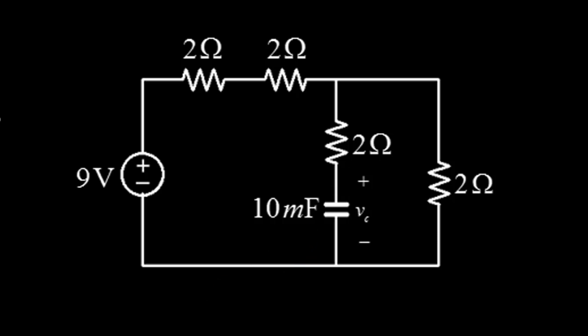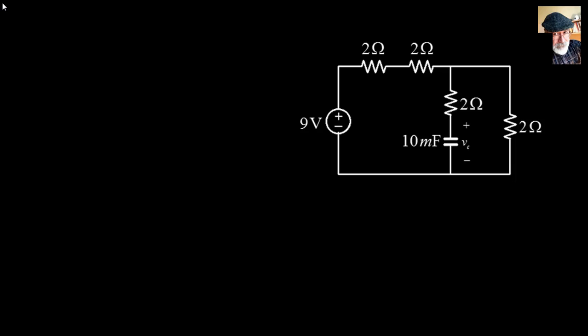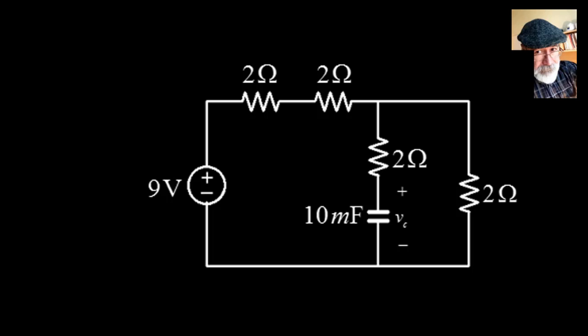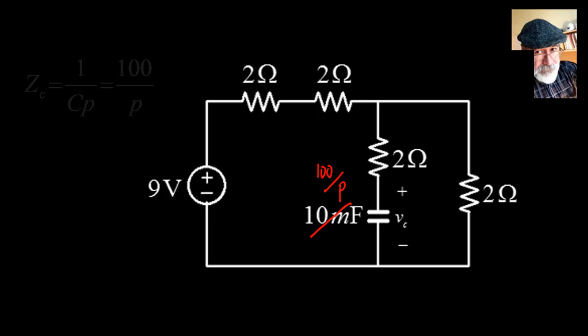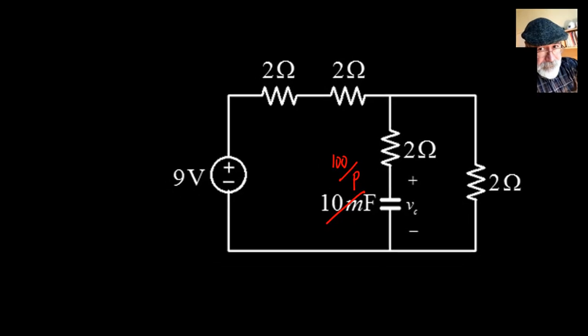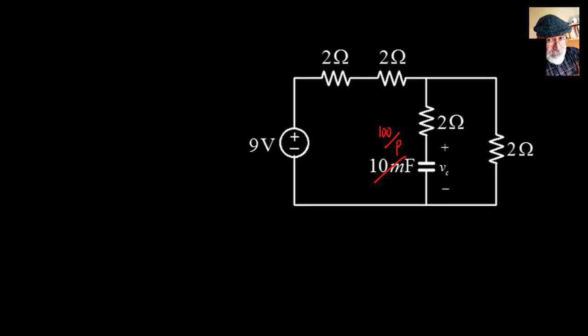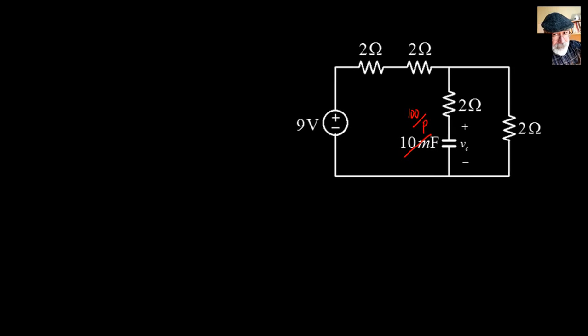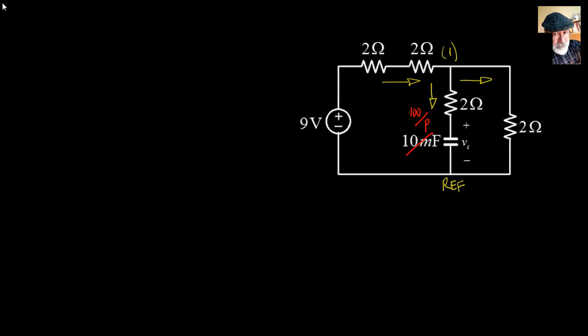Let me take the circuit over to the next page. The first step is to replace the reactive elements by their p-impedances. The impedance of a capacitor is 1/Cp — here, 100/p. Then we show the circuit using MNA (Modified Nodal Analysis), or your method of choice. Choose a reference node; I choose node 1 on the top.